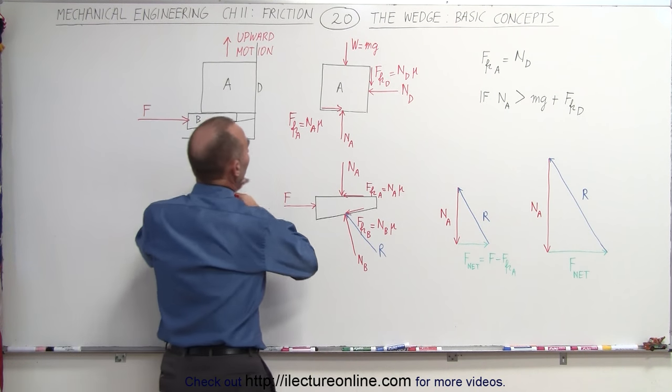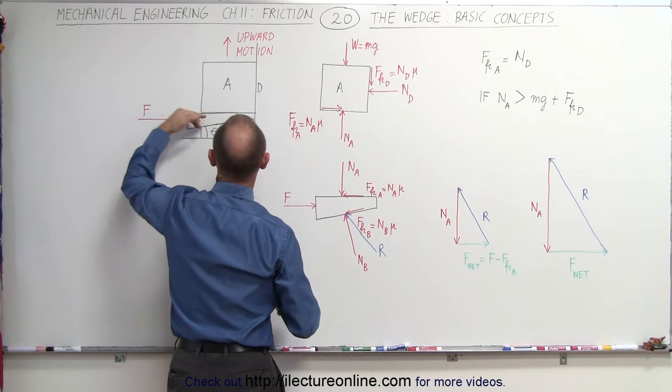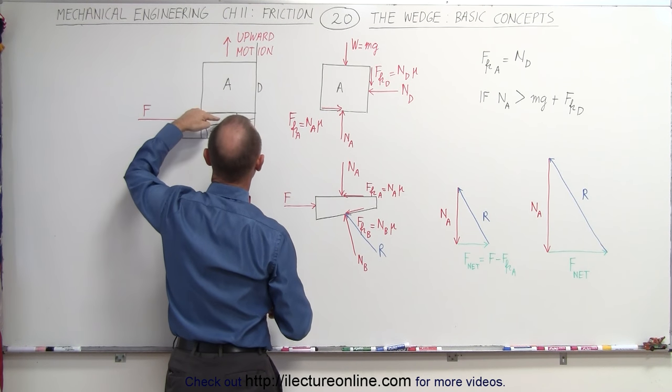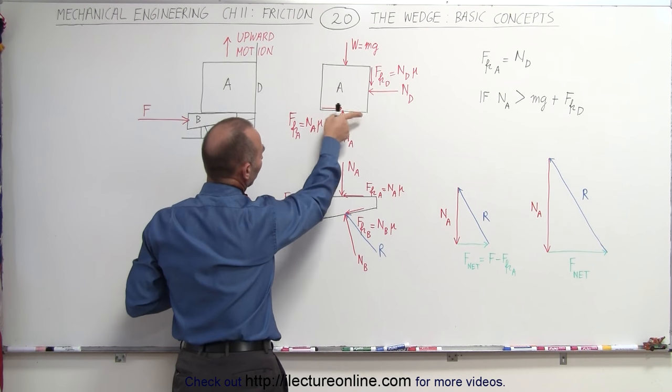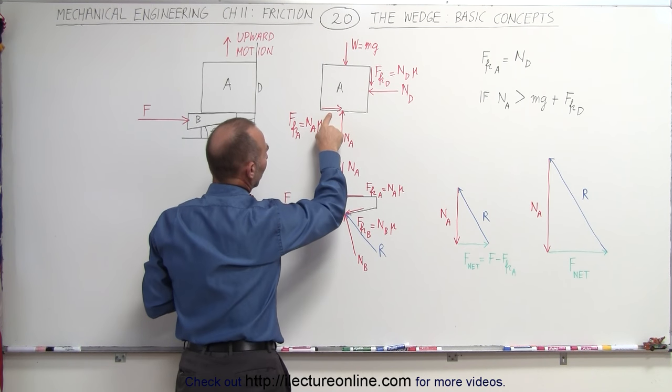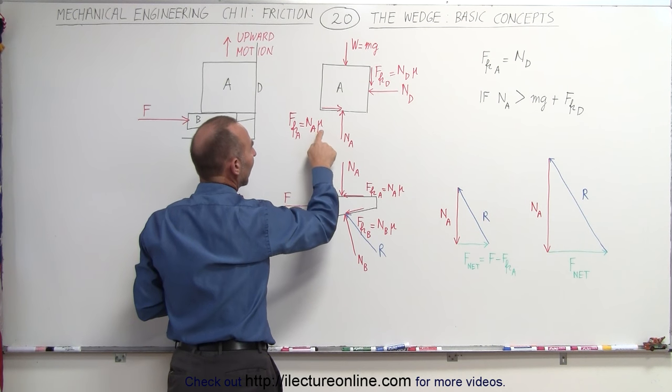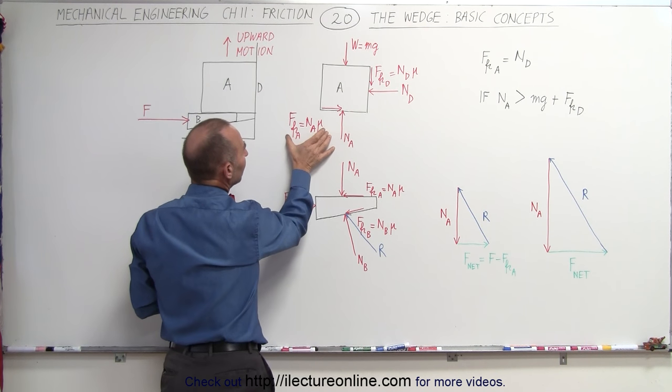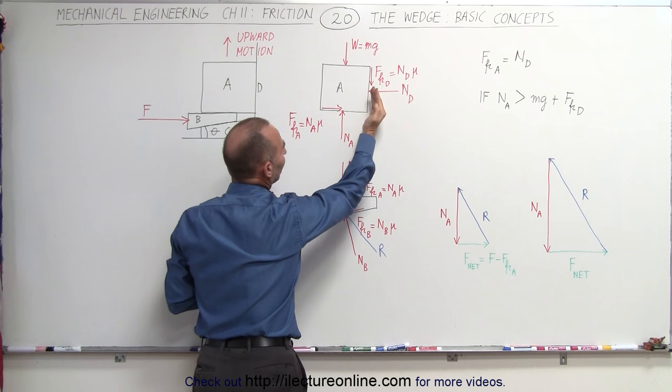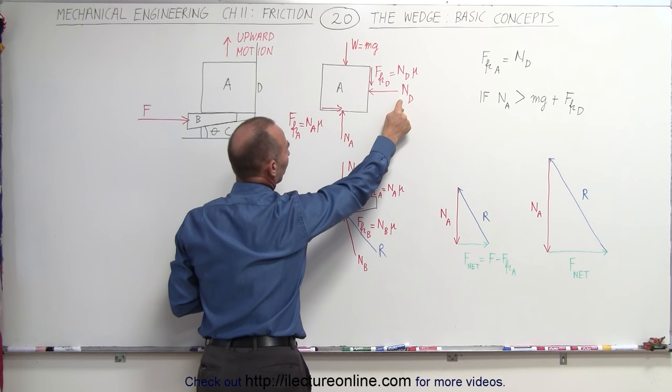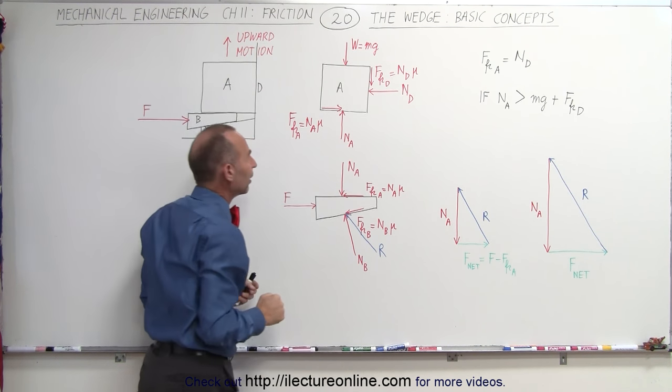We can also see that the force driving the wedge in here will cause the friction force to exist between B and A, which causes the force to act on A in the positive x direction. That's the friction force at A, which is the normal force at A times mu. That will then cause the normal force to exist on the back surface here, called the normal force at D, which then causes the friction force over there.